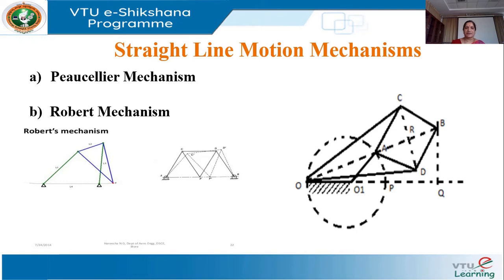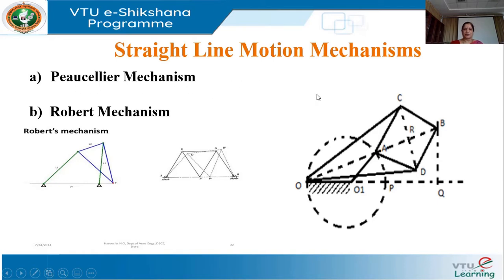Now I will discuss straight line motion mechanisms. There are two types: the exact straight line motion mechanism and the approximate straight line motion mechanism. The Peaucellier (Basiliers) mechanism is an exact straight line motion mechanism, and the Roberts mechanism is an approximate straight line motion mechanism.